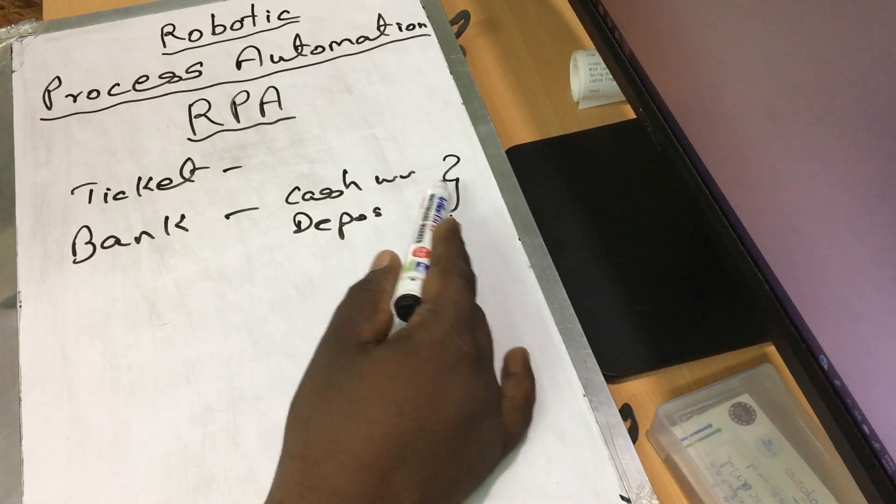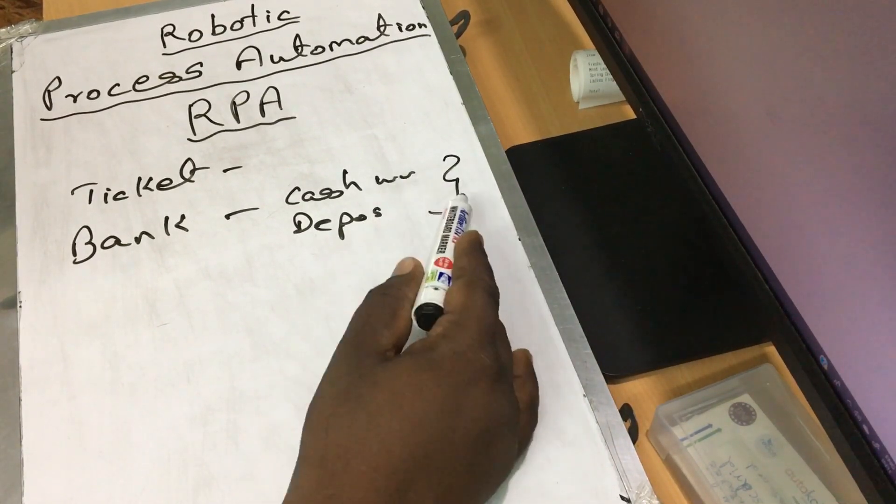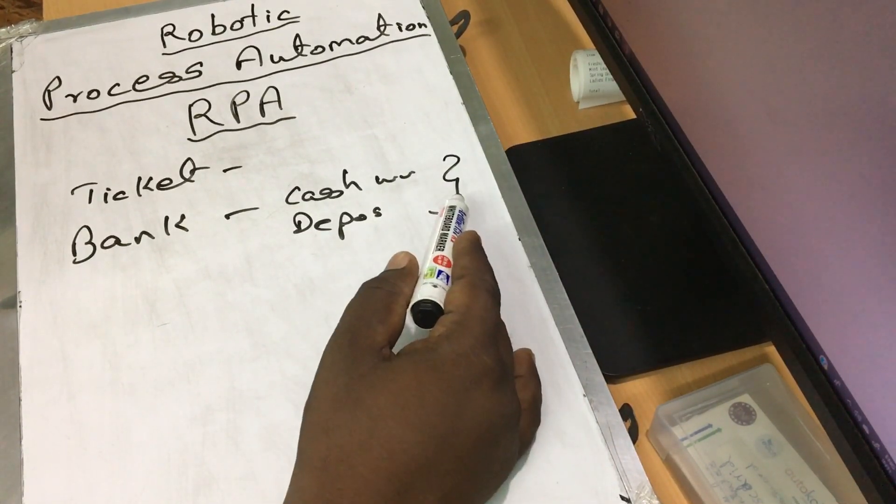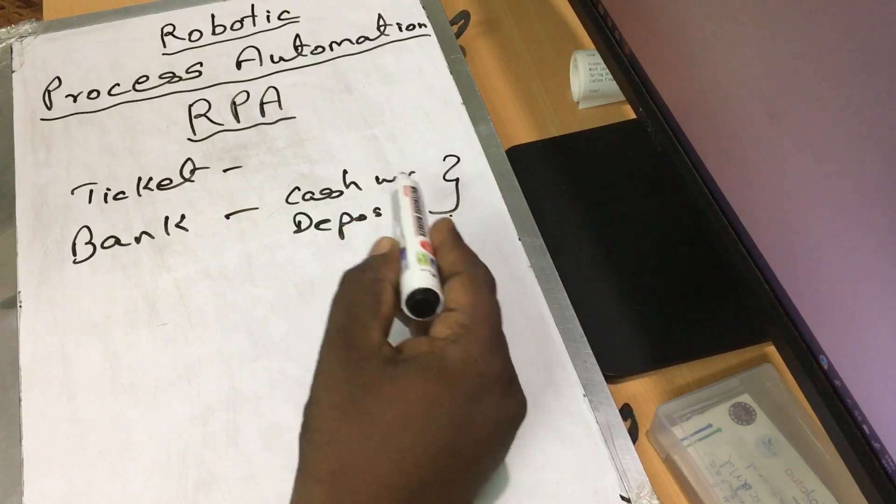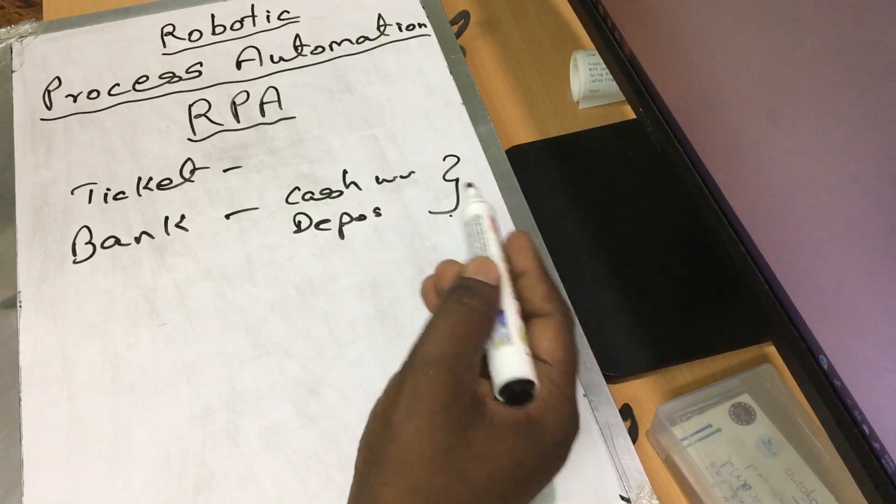So why is this happening? We are regularly doing the same tasks. How do we automate it?